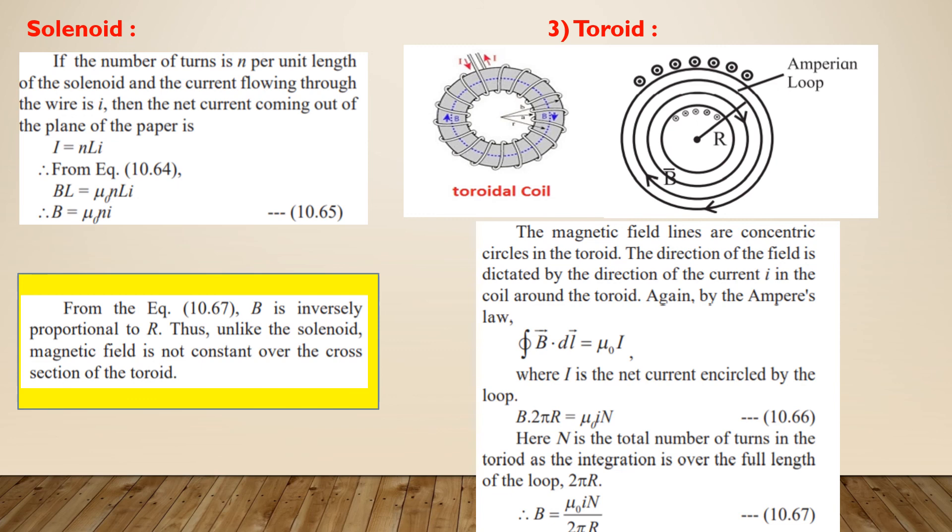Also, the integration over the entire Ampere loop is equal to the circumference of the circle that is 2 pi R. Substituting these values, we can get the final expression for the magnetic field inside a toroid at a distance R from its center as B is equal to mu0 IN upon 2 pi R.